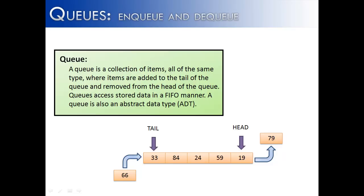In this video, we're going to be looking at queues. What queues are are they're a collection of items, all of the same type, where items are added to the tail of the queue and removed from the head. With all terminology aside, queues are just lines.